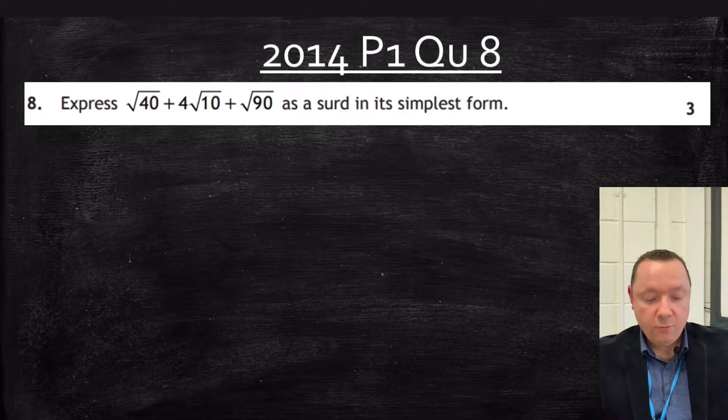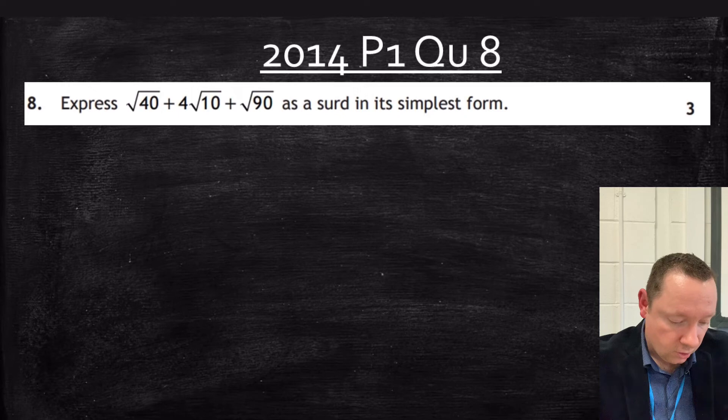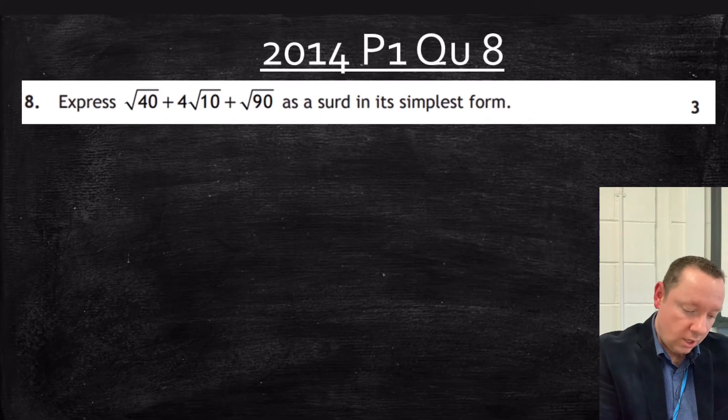A past paper question, 2014 Paper 1 question 8. Express root 40 plus 4 root 10 plus root 90 as a surd in its simplest form. Can't add them until they're all simplified.